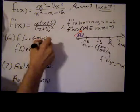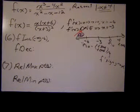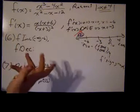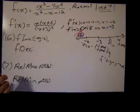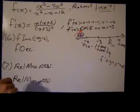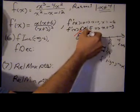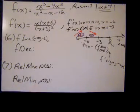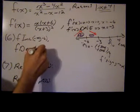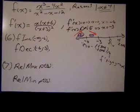The first interval of increase is from negative infinity to negative 6. Now testing the interval from negative 6 to negative 3, I'll use negative 4 as the test value. Negative 4 times positive 2 gives a negative in the numerator; the denominator is squared so it's always positive. We have a negative over a positive, which gives a negative, so the function is decreasing on the interval from negative 6 to negative 3.